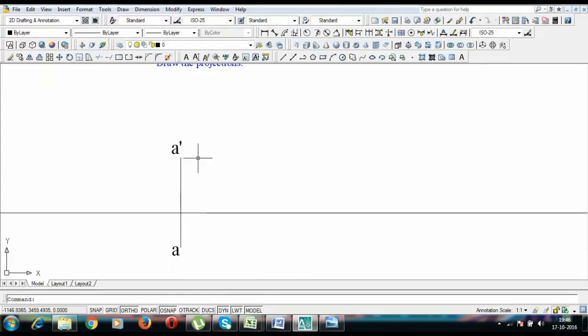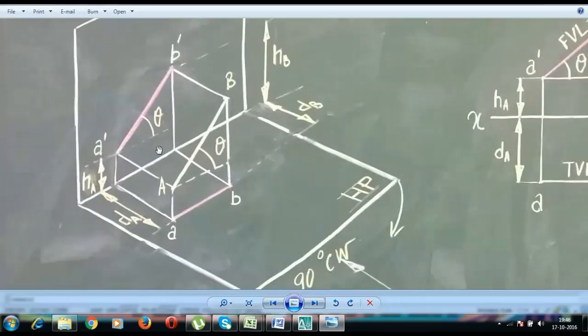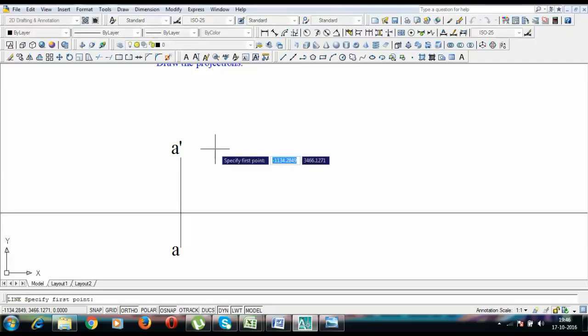Now we're going to see this true length of this line from the front. This true length is 50 millimeters at an angle of 45 degrees. So let's draw this. True length is 50 millimeters at an angle of 45 degrees. So that's the true length. And this point over here corresponds to point B dash since it's a front view.